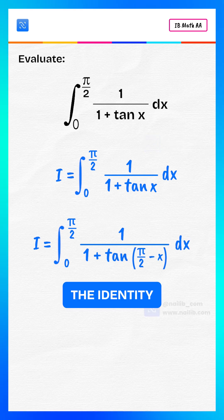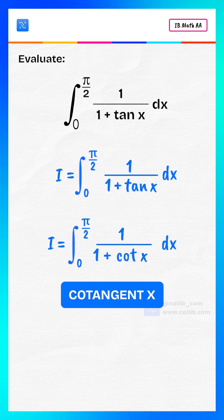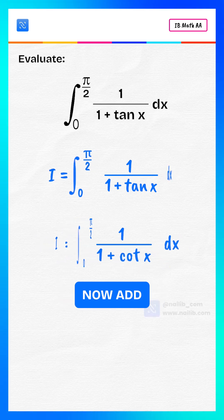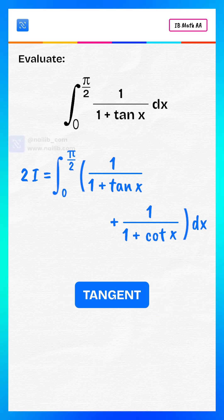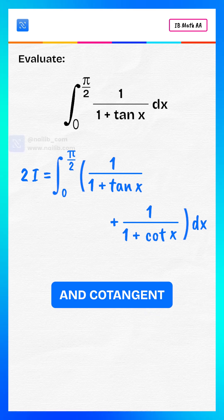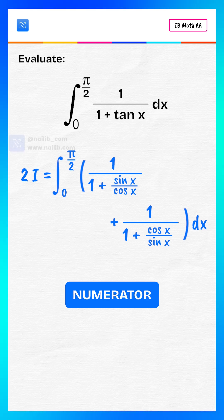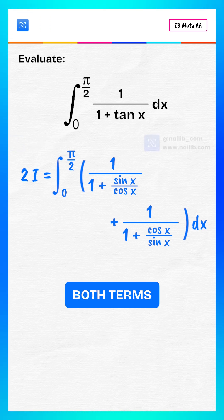Now recall the identity: tangent of pi by two minus x equals cotangent x. Now add both expressions and simplify. We express tangent and cotangent in terms of sine and cosine, then multiply numerator and denominator to simplify both terms.